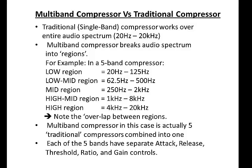For example, in a 5-band compressor, the low region could be from 20 to 125 Hz, the low mid from 60 to 500 Hz, the mid from 250 Hz to 2 kHz, high mid from 1 kHz to 8 kHz, and the high region from 4 kHz to 20 kHz.